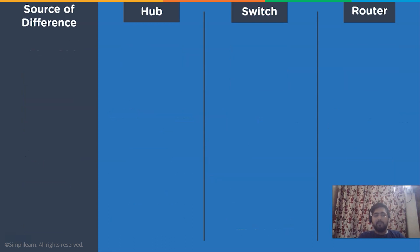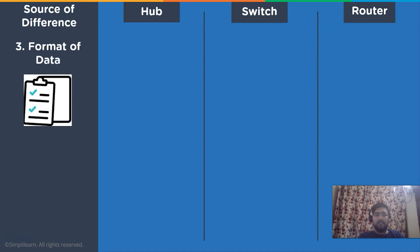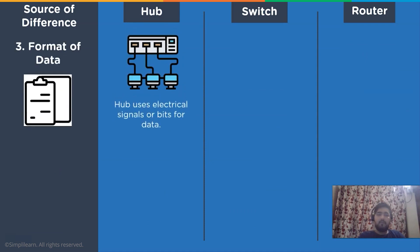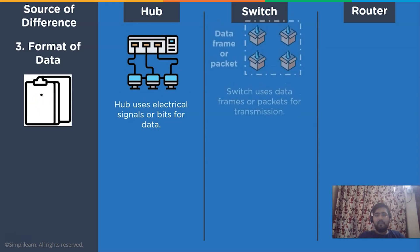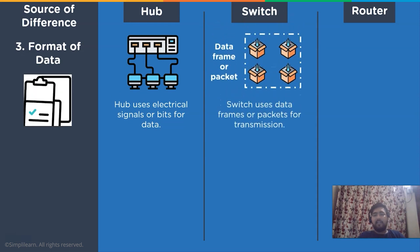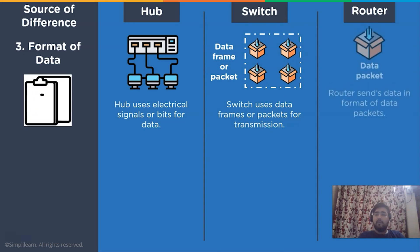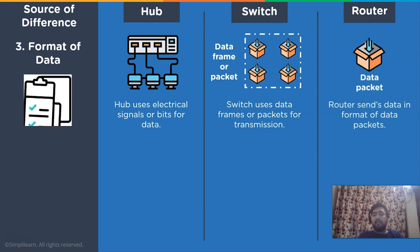Let's move on to the format of data used in each of them. A hub uses electrical signals or bits for data transmission in a network channel. A switch uses data frames or data packets for the transmission of data over the communication channel. And in the case of a router, it uses data packets to be transferred.